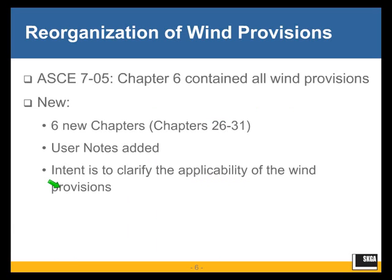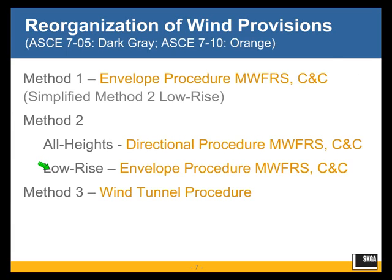One thing you will see that is new in those chapters are user notes within boxes, which ASCE 7 has never used before. The purpose of those user notes is not to give commentary — the intent is to clarify the applicability of the wind provision to which a user note is attached. Very limited objective there.